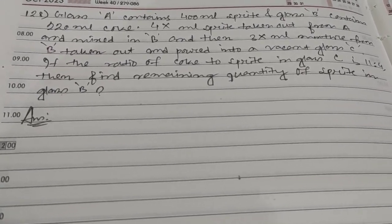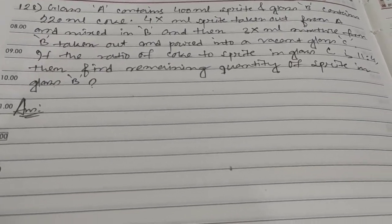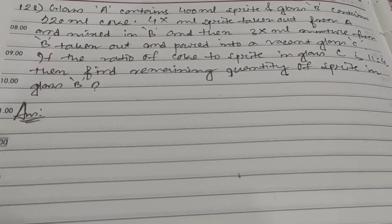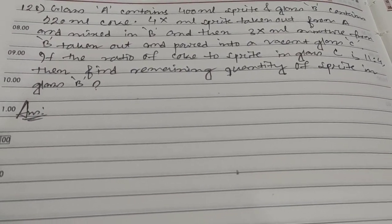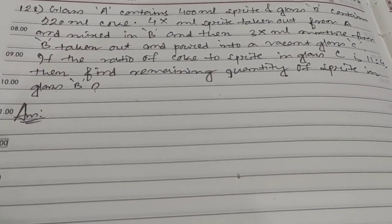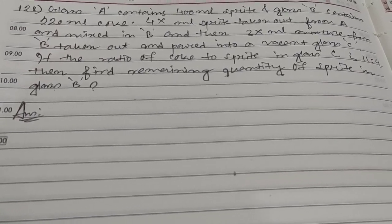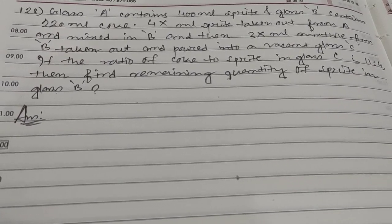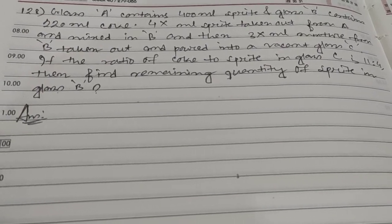Hi students, this is question number 128. The question is: Glass A contains 400 milliliter sprite and Glass B contains 220 milliliter coke. 4x milliliter sprite is taken out from A and mixed in B.